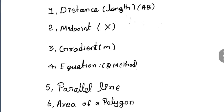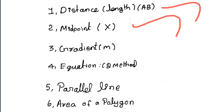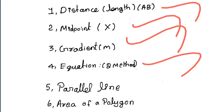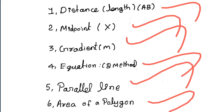First, we will learn about the topics. We will learn about 6 topics. This is the distance — the distance and the midpoint. The gradient is to find. The equation is the parallel line. The error is the value. This is the sixth topic.